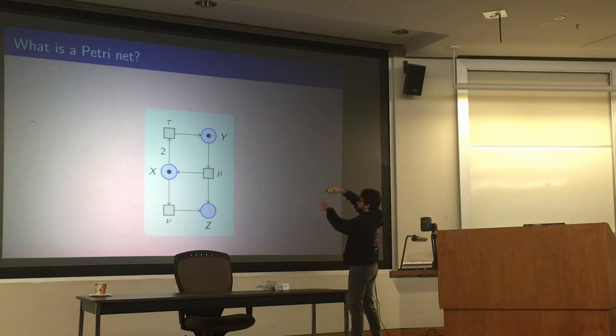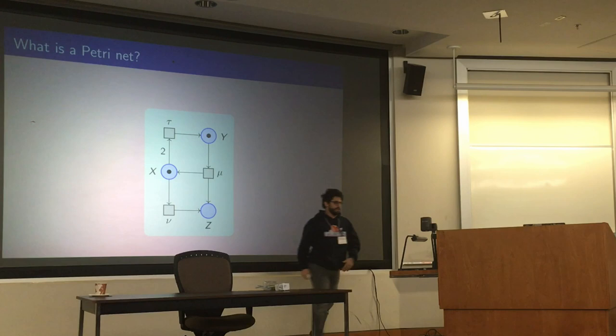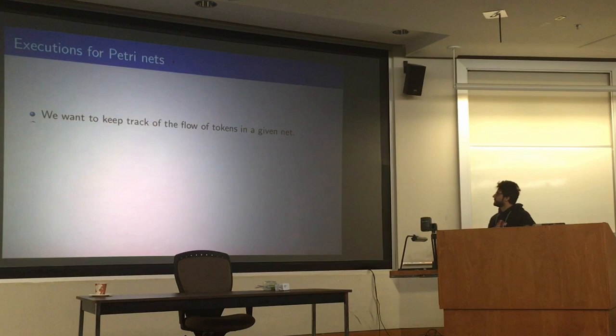Since this is basically a theory about resources, transitions have to compete to fire. So for instance, if this thing fires, this thing is stealing the token from here. So now this thing will need to wait even more to get tokens. So you can see nu firing now. When nu fires, I get two tokens in X and one in Z. Then I can fire tau for instance.